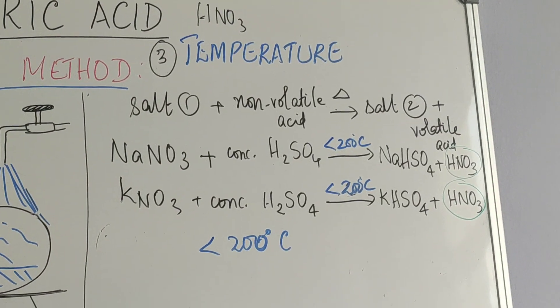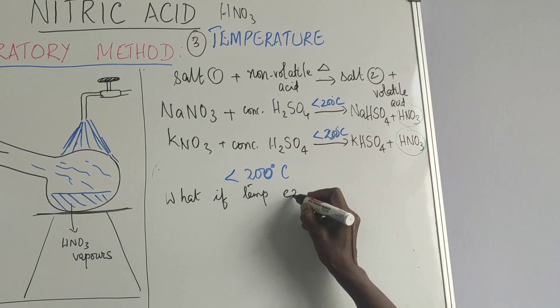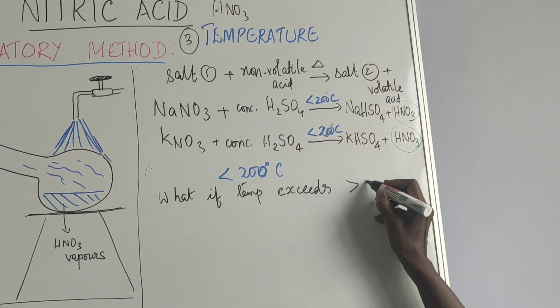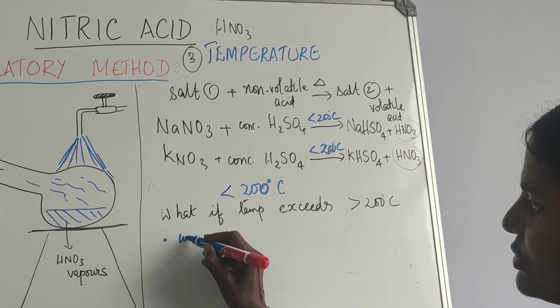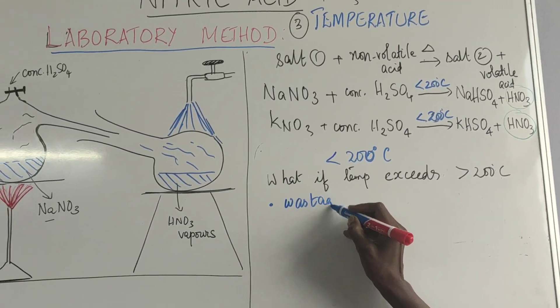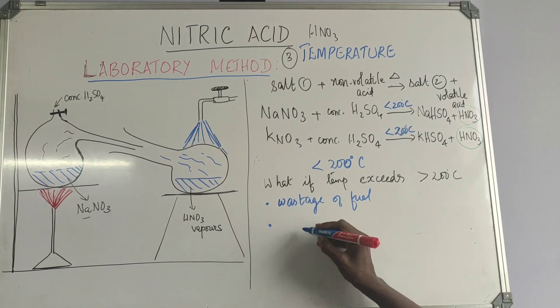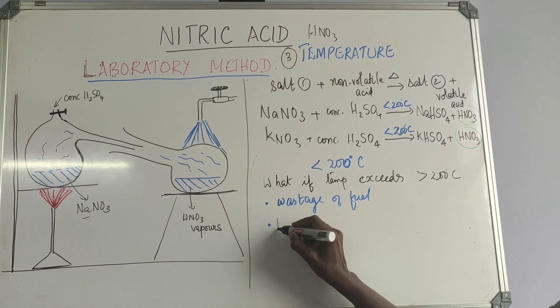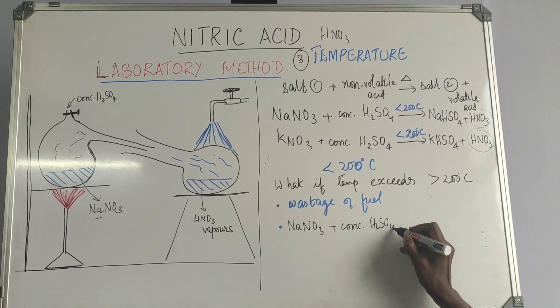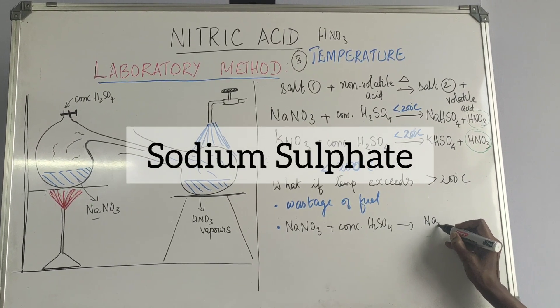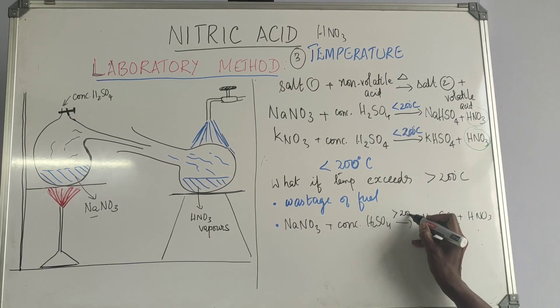What happens if the temperature exceeds? What if temperature exceeds 200? There are three things that can happen. The first thing is, there is wastage of fuel. Second one, if the temperature increases, then the product formed is different. Sodium nitrate plus concentrated sulphuric acid gives you sodium sulphate plus nitric acid. Then the temperature is above 200.